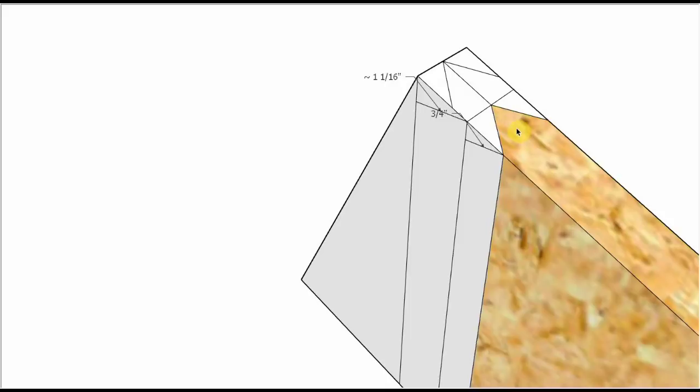Later on when we're laying out the bird's mouth cuts, we measure our line length off of this point, though, because that's where the 12 feet of run is running to—to the center of the ridge. So we don't cut this right away. We wait till we do the full layout so that we can measure from this point.